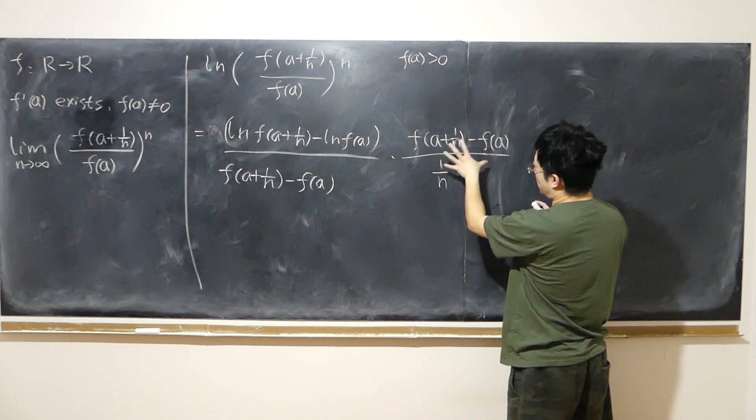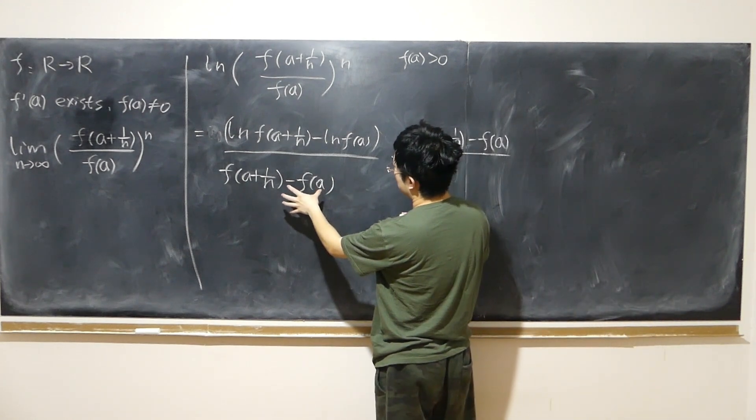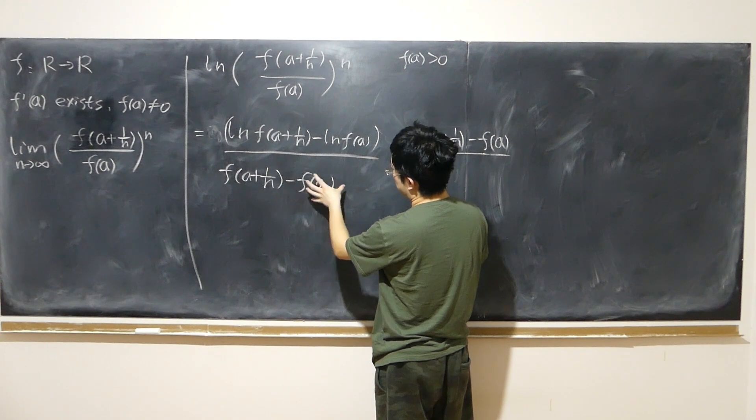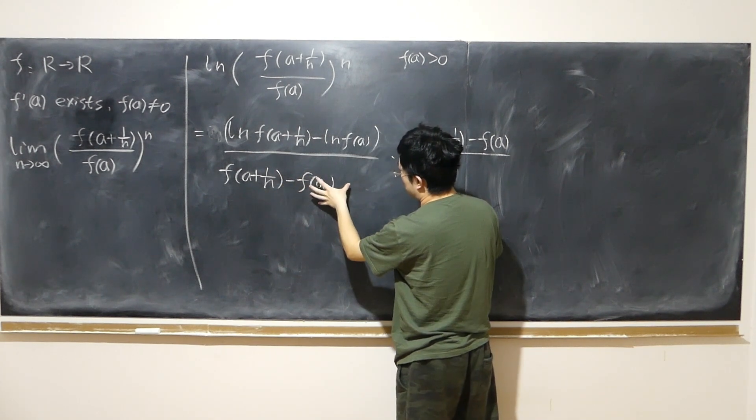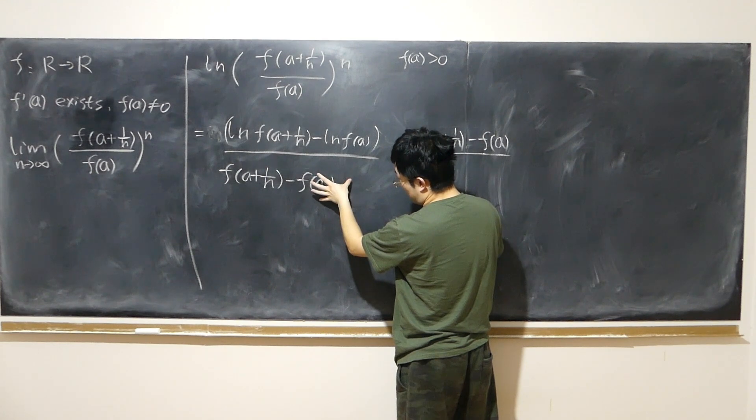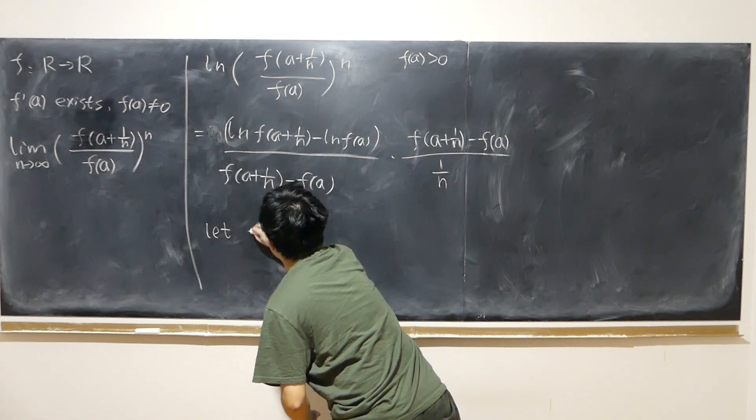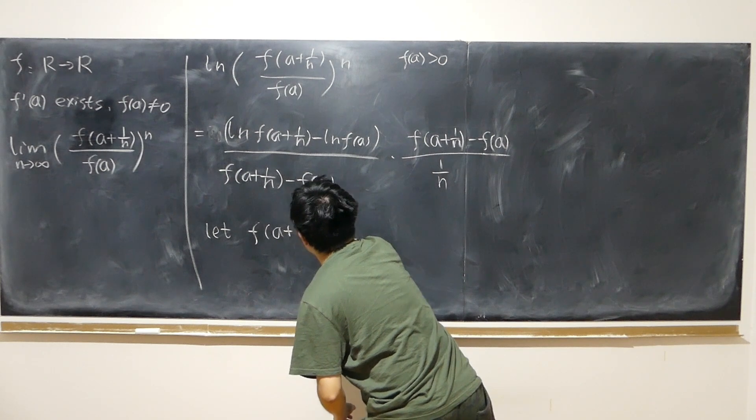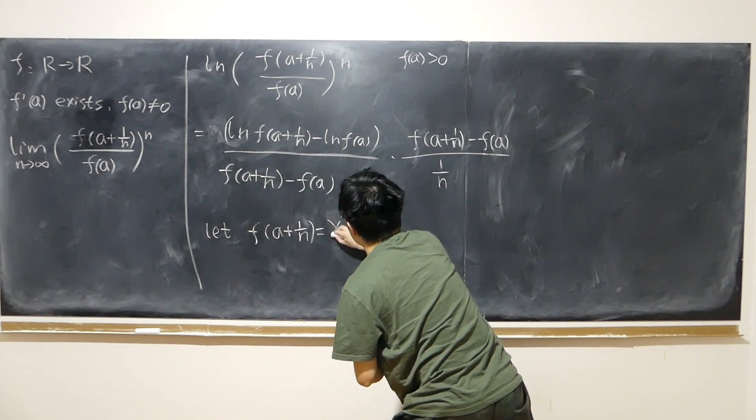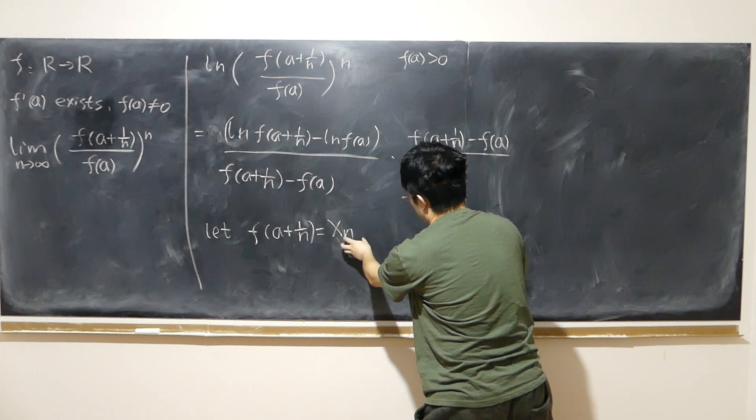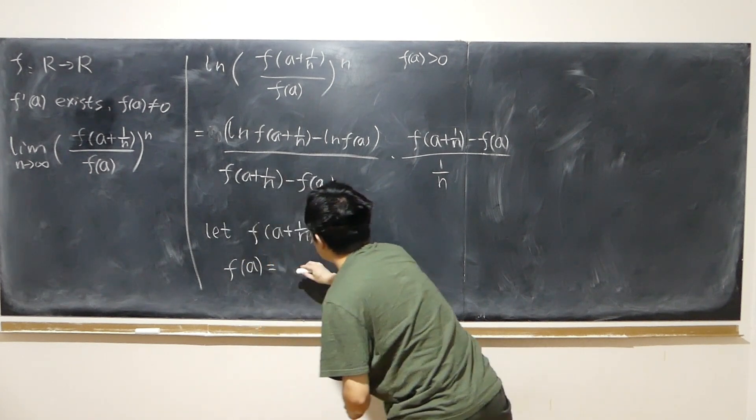Now focus on this expression. So that means in this part, we have exactly the form of derivative of f at the point a. But here, this part looks also familiar. Even though we don't exactly have a, but here we have f(a) treated as a whole entity. For example, if I let f(a+1/n) equal x_n, it's dependent on the value of n. And also the f(a) equal x_0.